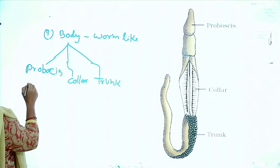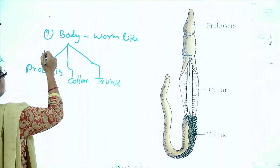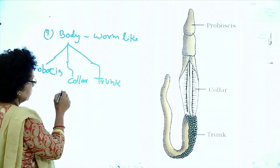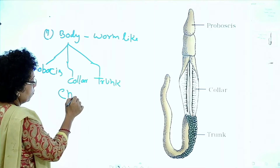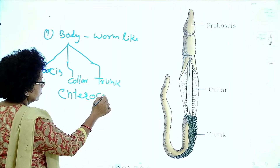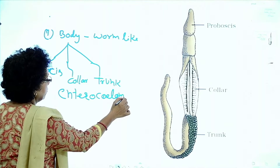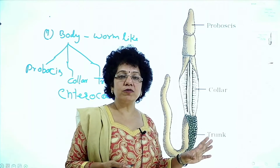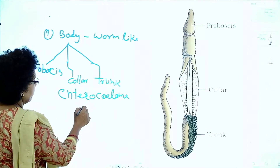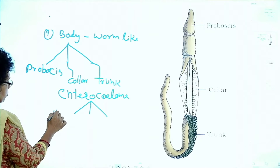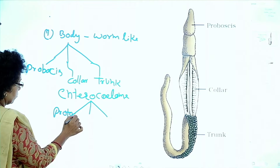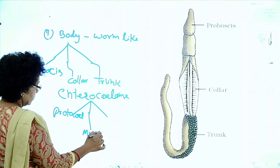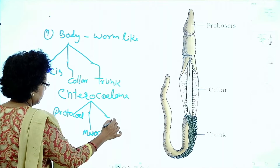The coelom — the body is worm-like, body is divided into proboscis, collar, and trunk. The coelom is an enterocoel, also called enterocoelous. The enterocoelous is divided into three parts: one is protocoel, second is mesocoel, and third is metacoel.